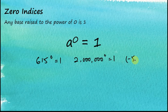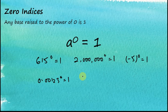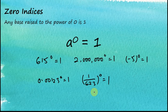The zero index for a negative number is equal to 1. And 0.00123 to the power of 0 is equal to 1. The zero index for any fraction — like 1 over 623 to the power of 0 — is also equal to 1. So the value of any number raised to the power of 0 is equal to 1.